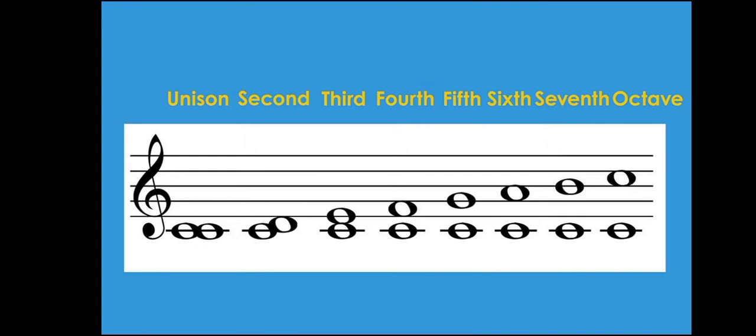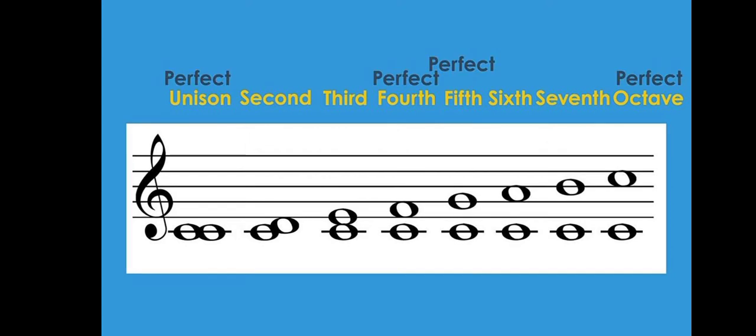We have now looked at the distance. We've also seen that there are interval types: major, minor, perfect, augmented, and diminished. For a major scale, the unison, fourth, fifth, and octave are all perfect. And the remaining ones — the second, third, sixth, and seventh — are all major.